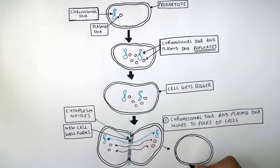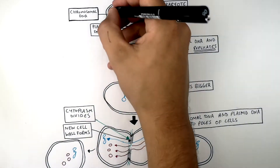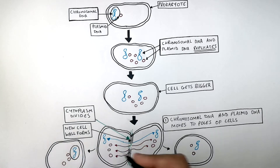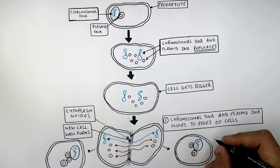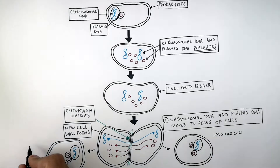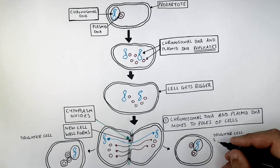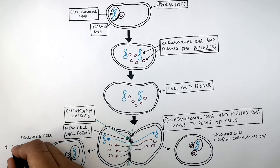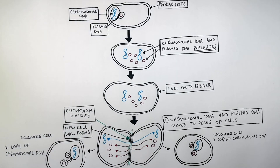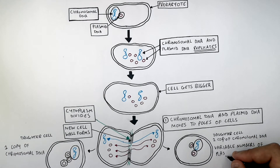And these here are the two daughter cells. Each cell has one copy of the chromosomal DNA, but they can have variable numbers of plasmid DNA. So binary fission has produced two daughter cells — each prokaryotic bacterial cell has one copy of chromosomal DNA, but remember, there can be variable numbers of plasmid DNA in the bacterial cells.